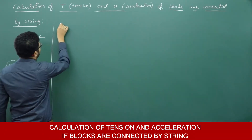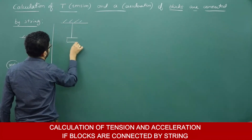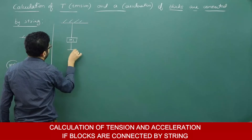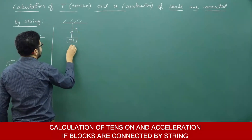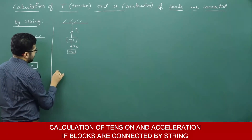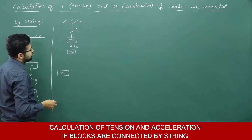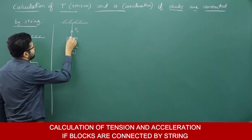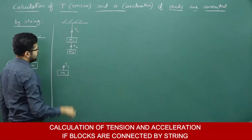Next situation: let me increase the number of blocks. Here there is a string — say this mass is m1, another mass m2 is connected. Now there is a tension T1 at the top and tension T2 below it. Writing the free body diagram for m1: one force acting on m1 is T1, which is upwards.